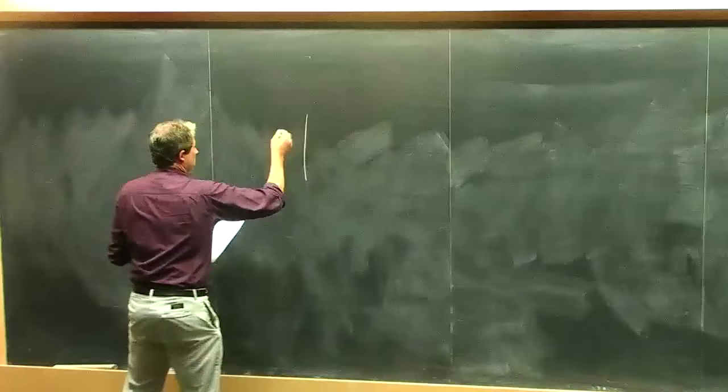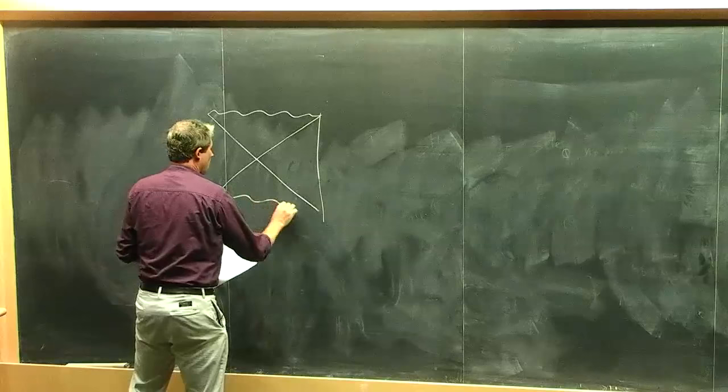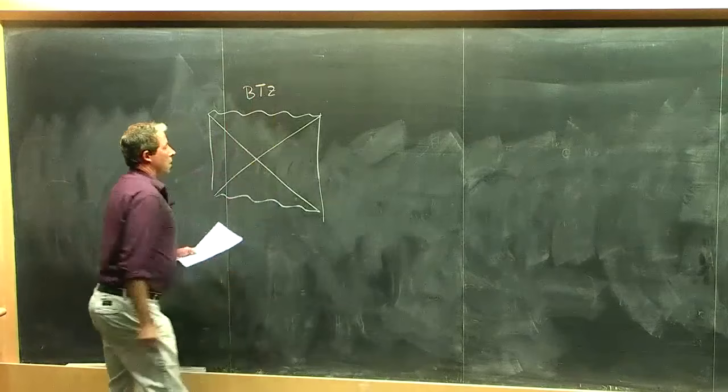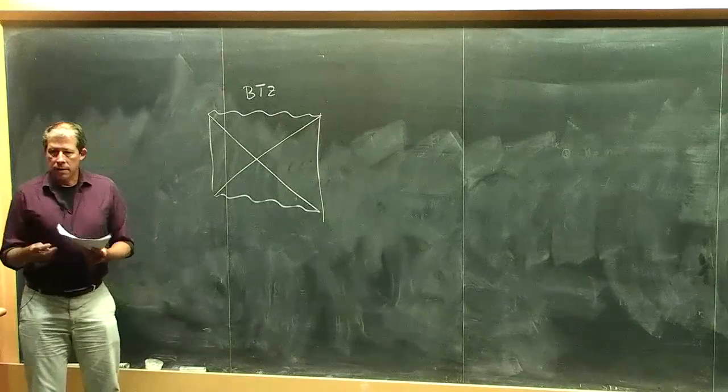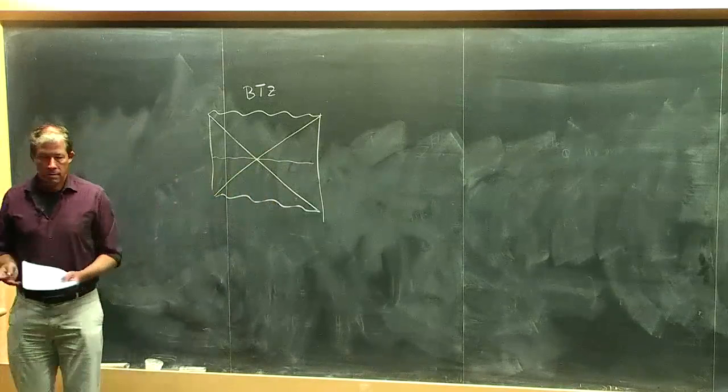If you take an ADS space-time with a black hole background — for simplicity an eternal black hole — then in ADS-3 this would be the BTZ black hole. Many of the puzzles we're struggling with concern how, from the point of view of the bulk, we should be thinking about a Hilbert space on the spatial section. There were many talks about this at this workshop.